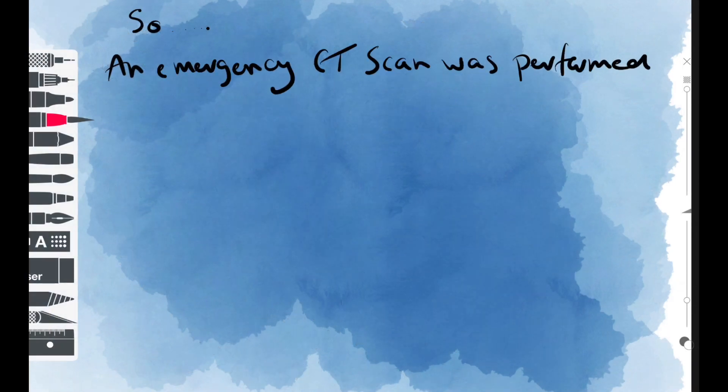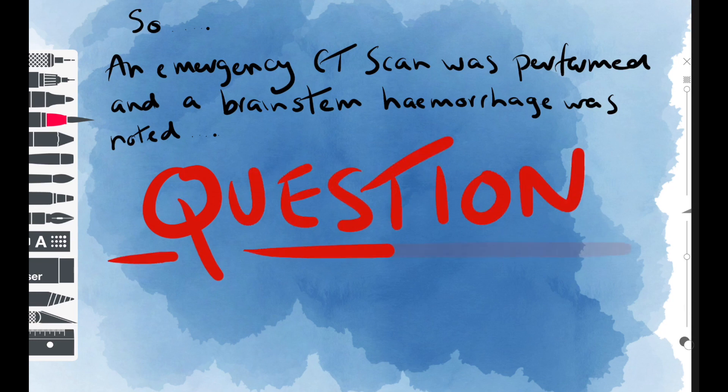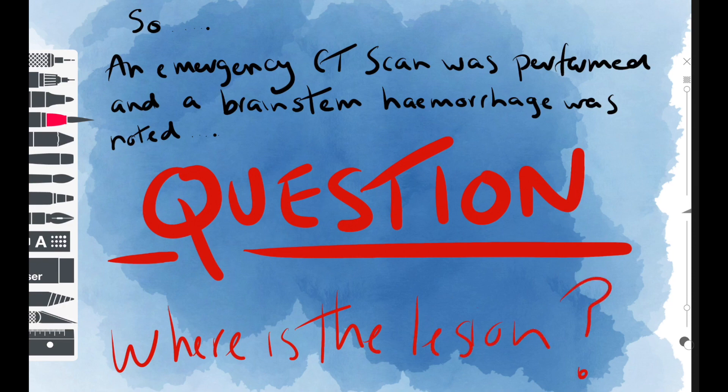An emergency CT scan was performed and this showed a rather large brainstem hemorrhage. So the question we are asking here is can we use information from the case relating to our knowledge of brainstem anatomy to figure out where is the lesion.